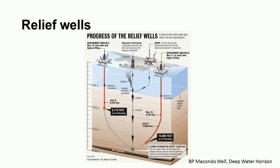Relief wells. In the worst possible scenario, a well is drilled as a relief well. This might be because a well has suffered a blowout and is releasing hydrocarbons into the surrounding environment, but the well cannot be killed from the surface. The relief well is then drilled to intercept the blowing well, and dense mud is forced into the blowing well to kill it from below. One example of this was the Deepwater Horizon blowout in the Gulf of Mexico in April 2010.